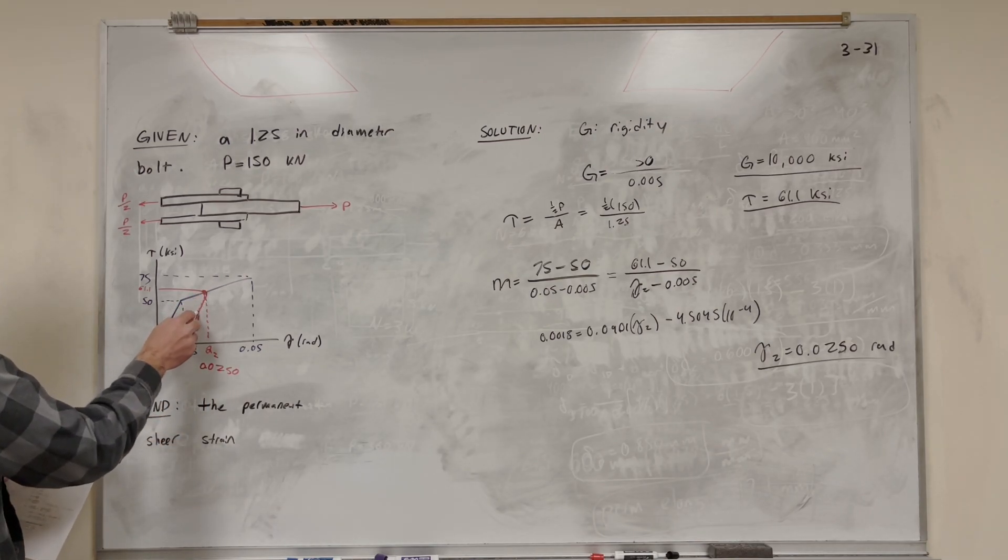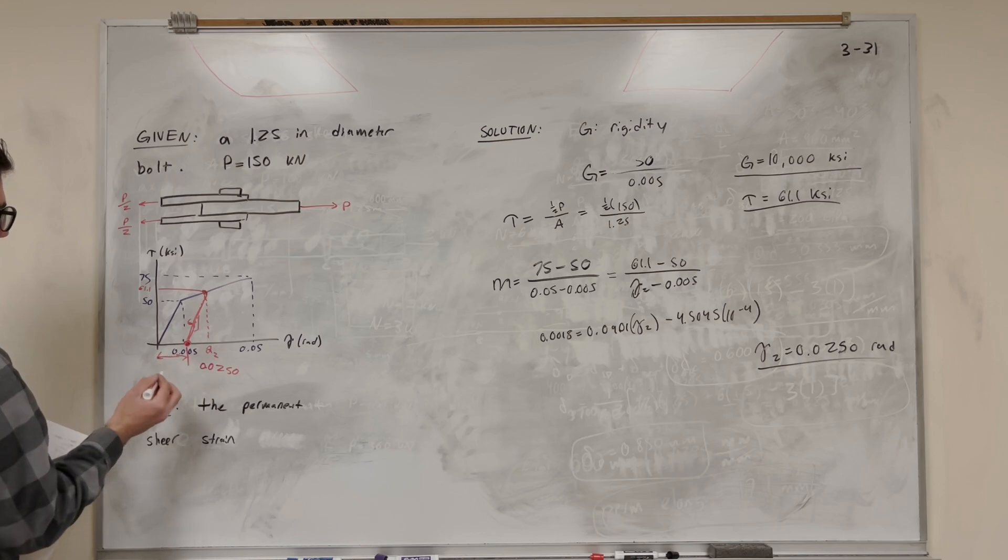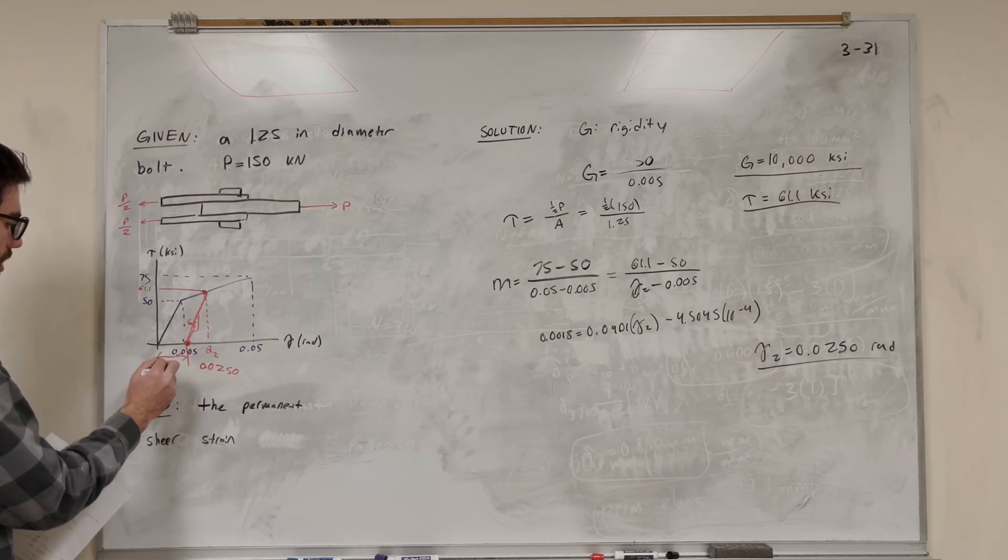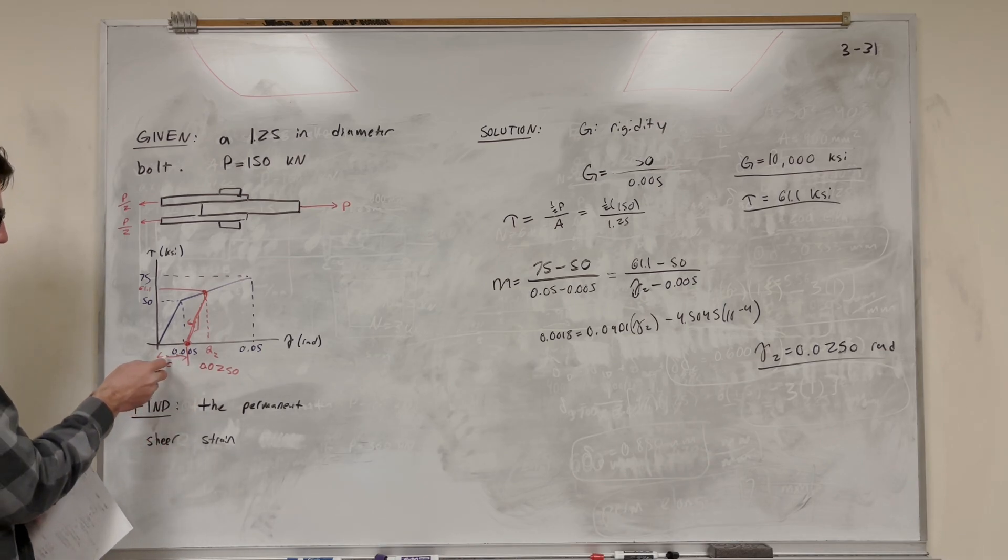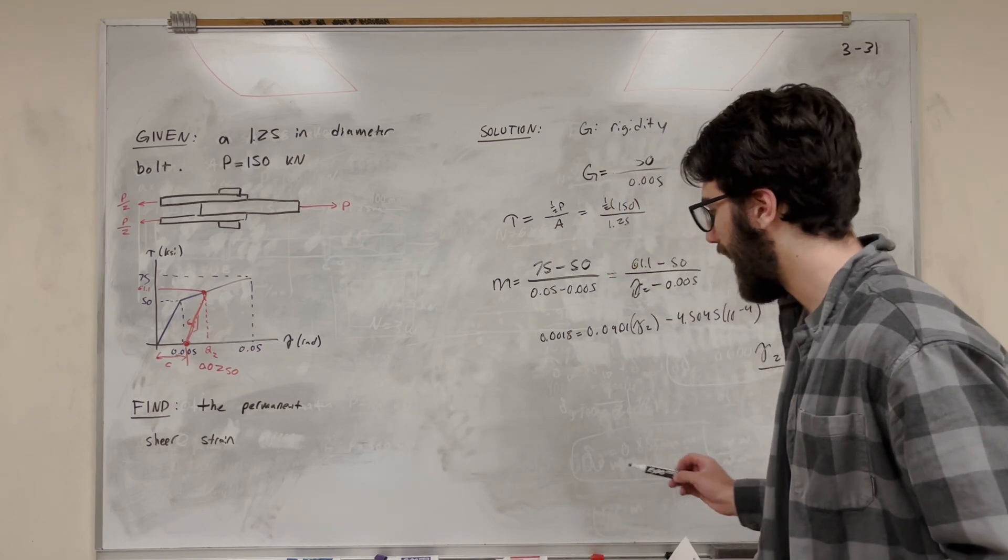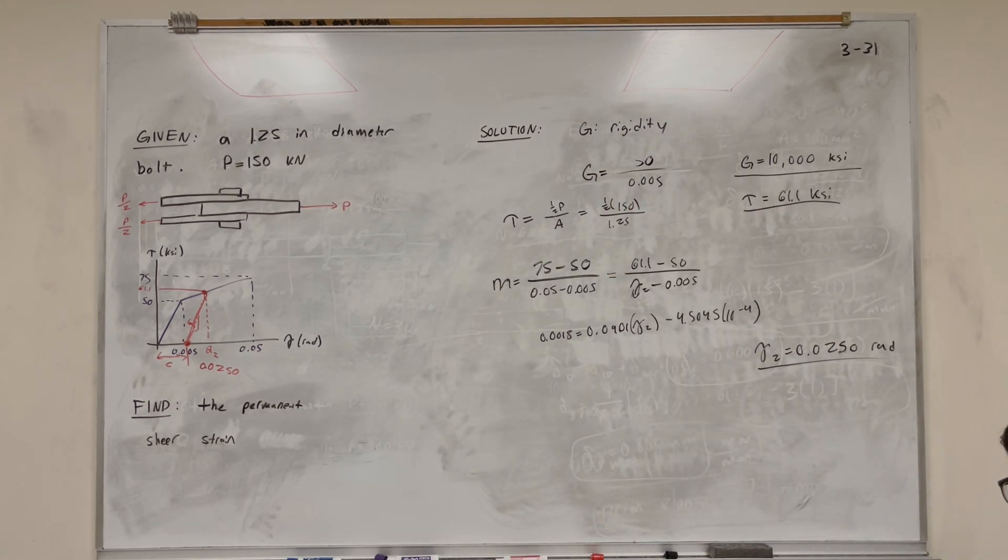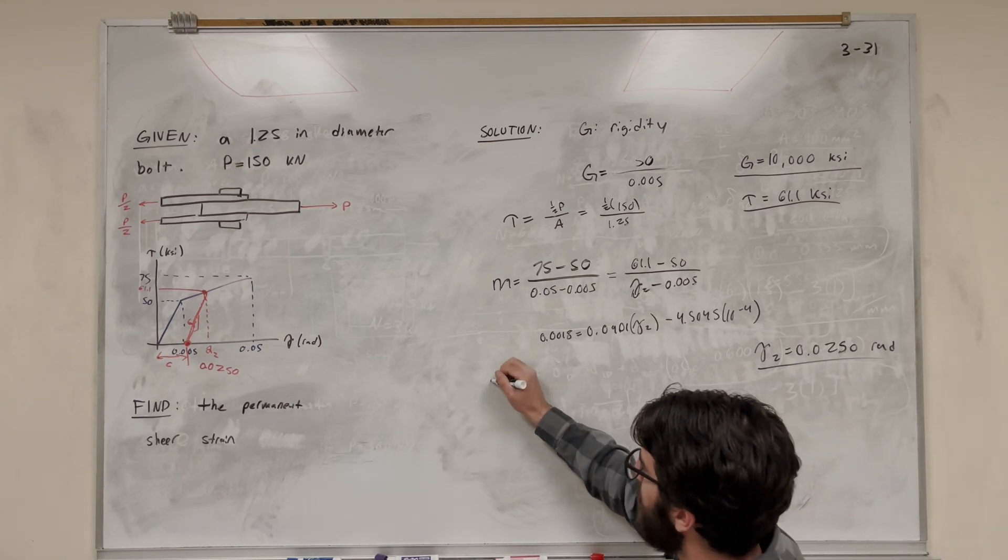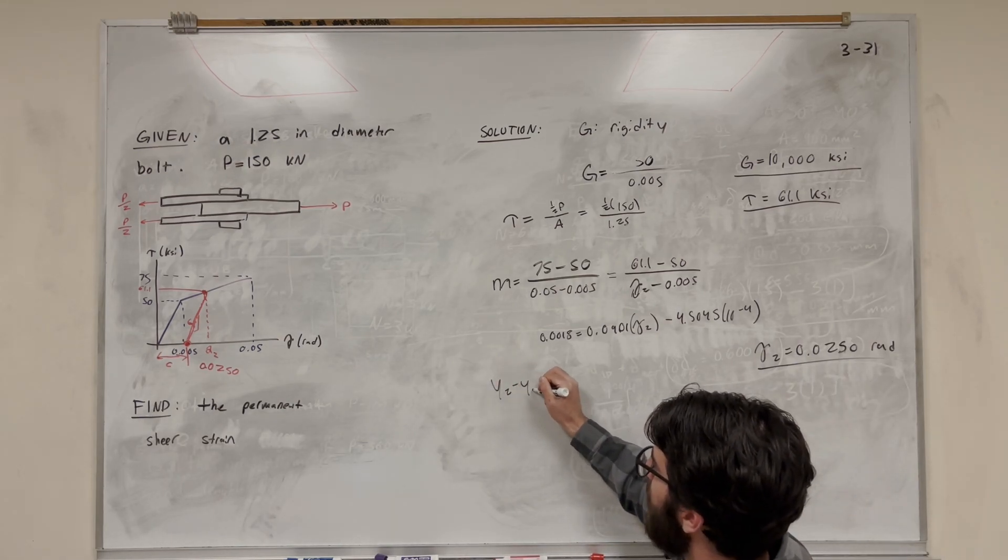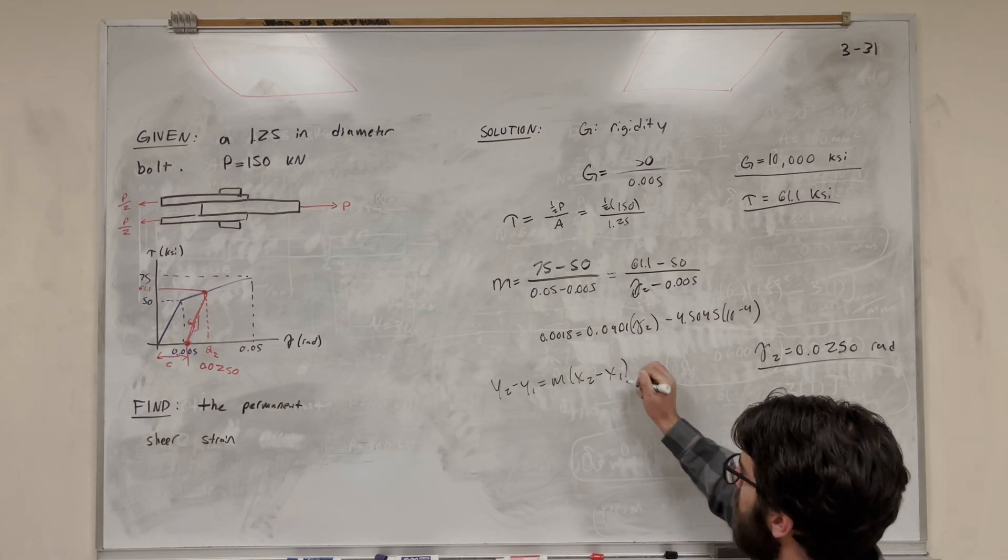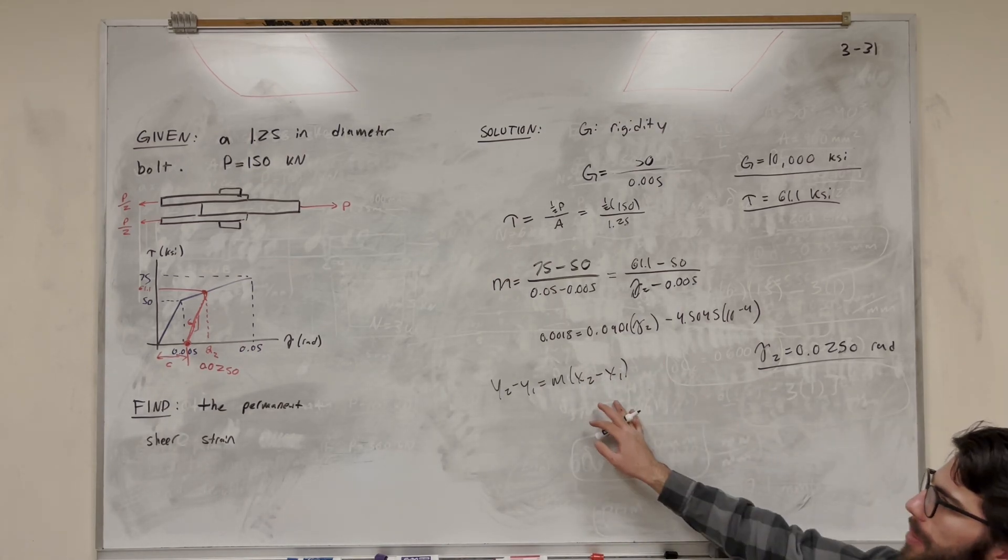That tells us that this point here, 0.0250. So now we need to find what this point here is. This is the point we're finding, and that's going to be the permanent elongation. So now we're going to take a blast to the past. We're going to go back to seventh grade. And we're going to use that point slope formula that you thought you'd never use again. So what is point slope formula? y2 minus y1 is equal to m times x2 minus x1.